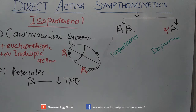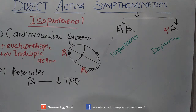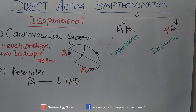Regarding pulmonary effects: isoproterenol is not currently used for pulmonary indications. However, Beta-2 receptors are present in the pulmonary system, and by stimulating Beta-2 receptors, isoproterenol causes bronchodilation.